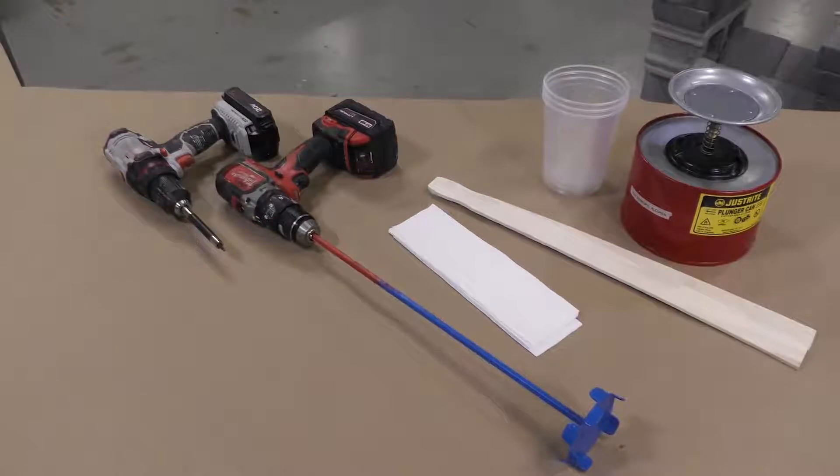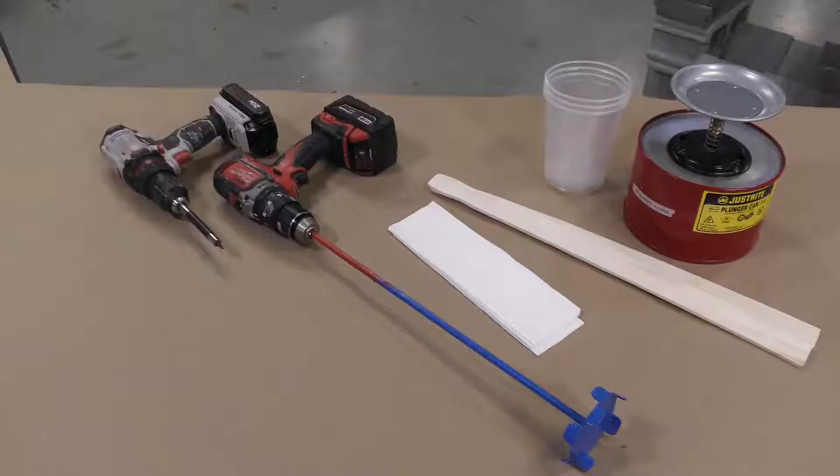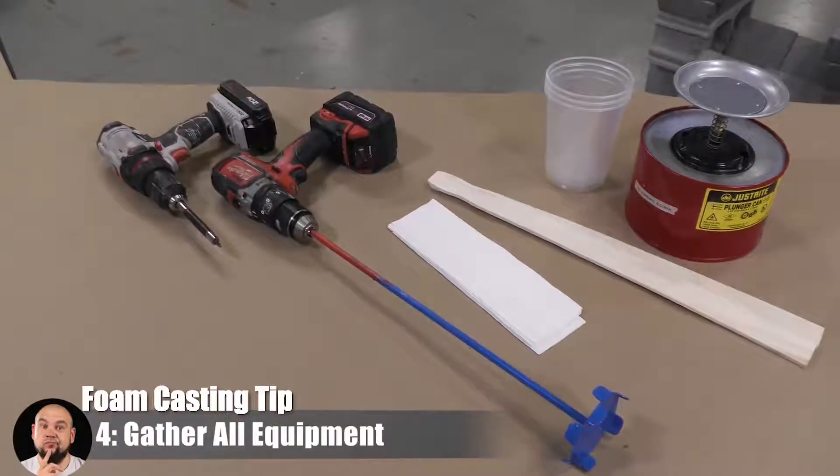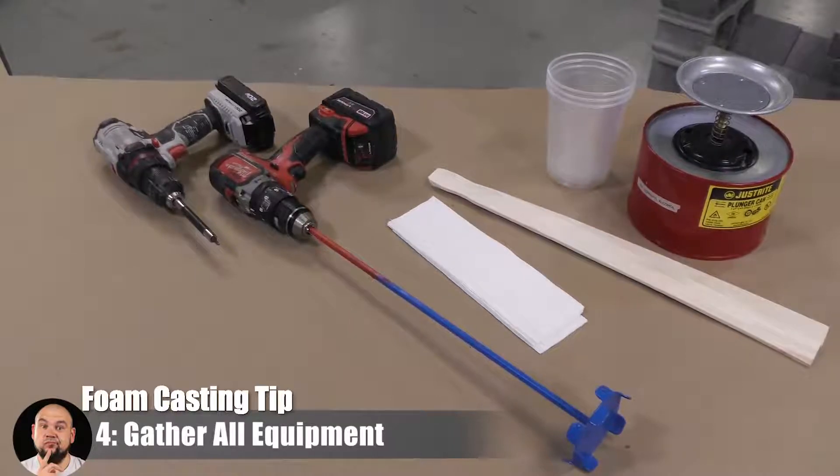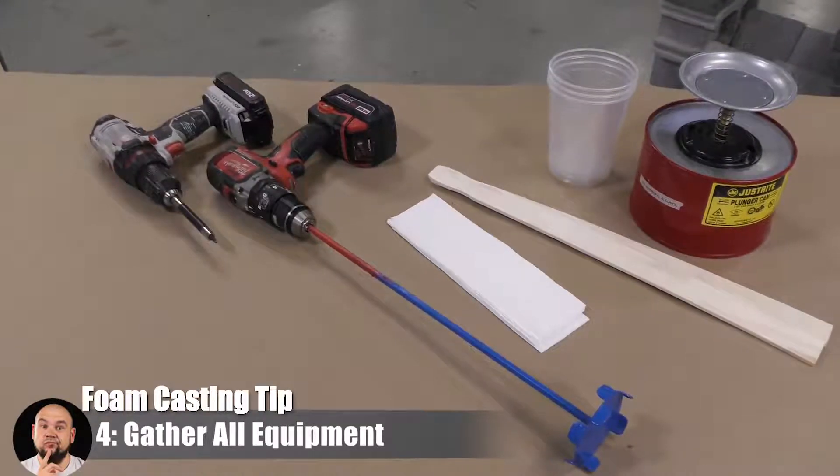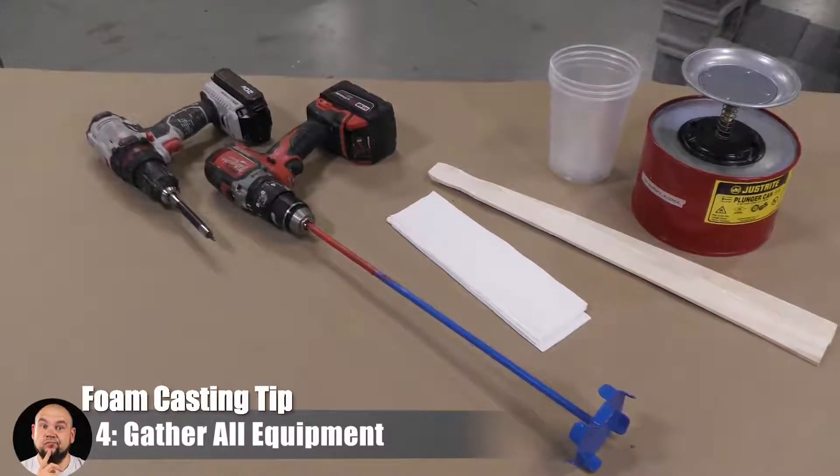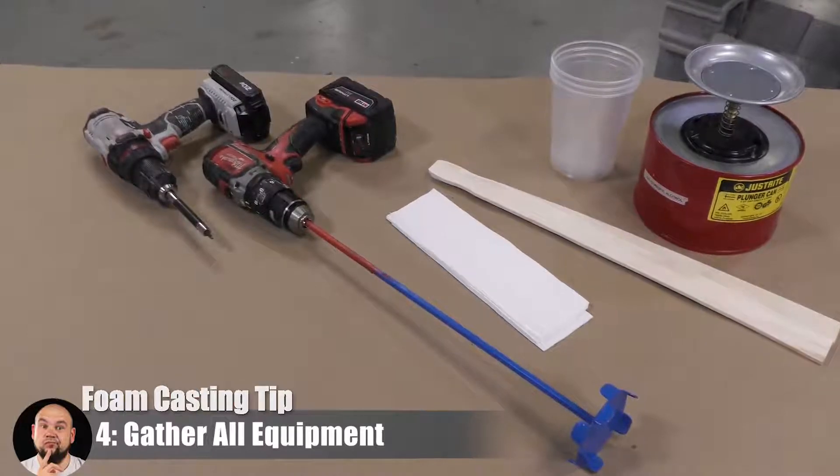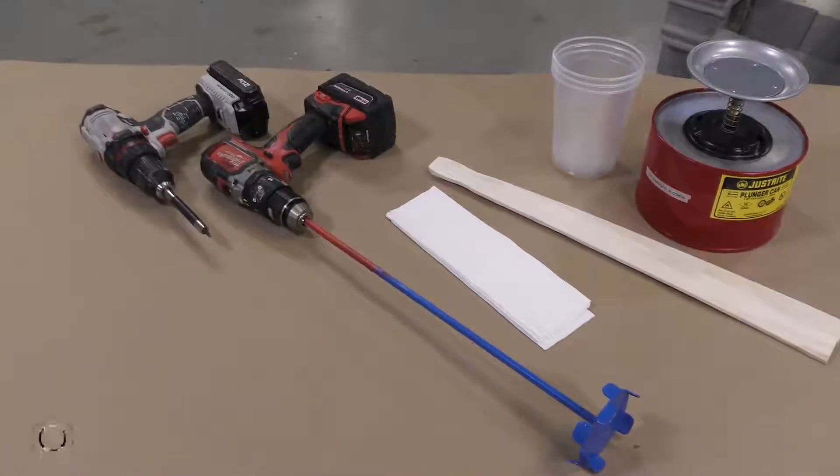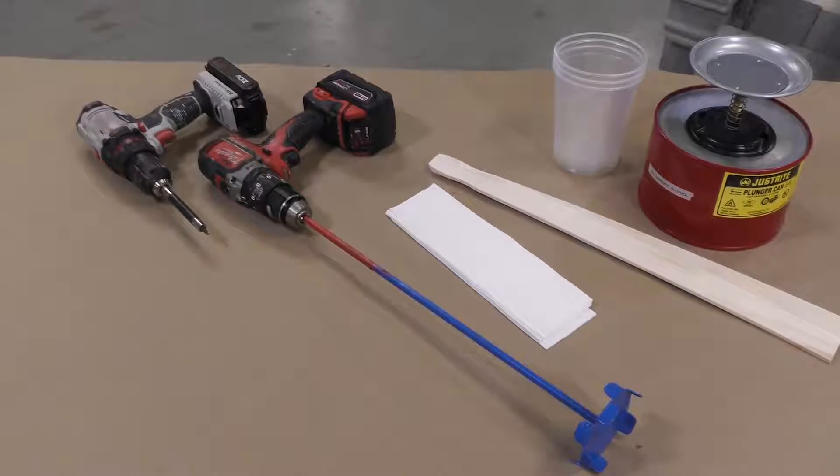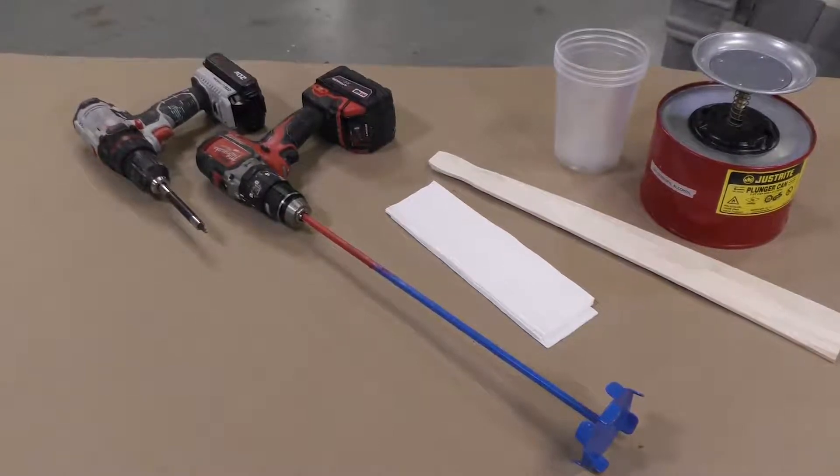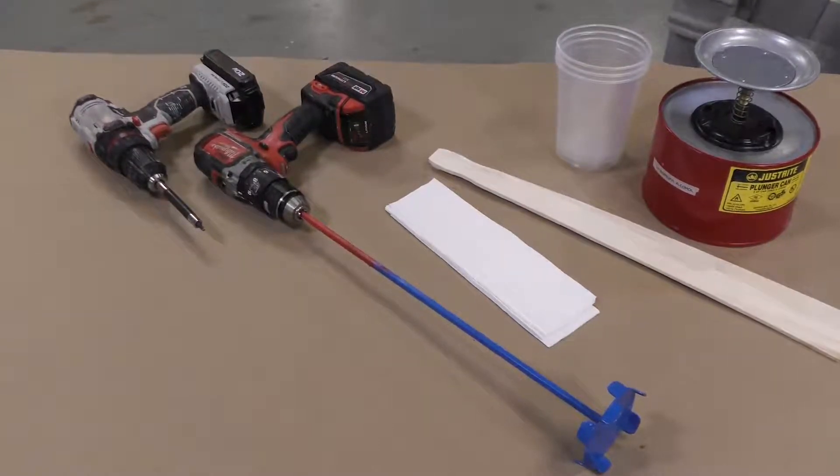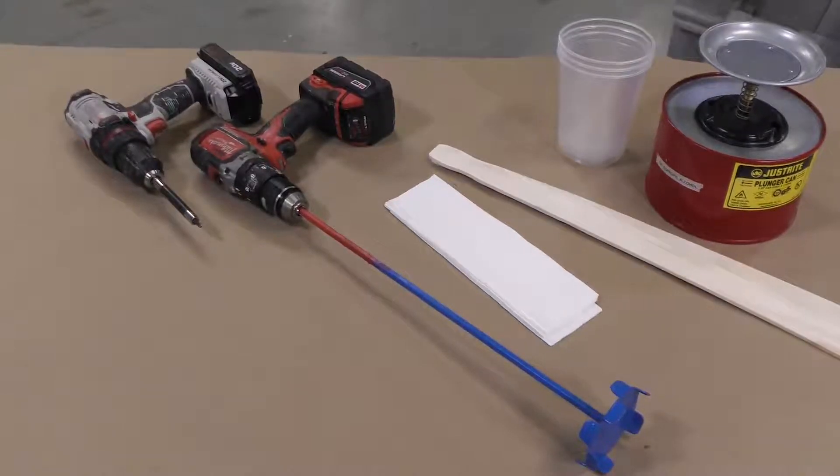Before you start actually mixing the product, it's important to lay out the tools that we're going to be using for this project. As you can see here, I have actually two drills. One has the turbine mixer and the other one has the screw attachment on it, that way I don't have to switch back and forth between the attachments when I'm working with a very short pot life material like the flex foam.